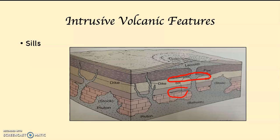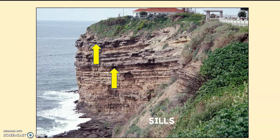Sills are formed when magma squeezes between sedimentary strata, cools, and solidifies, which you can see circled there. If you take a good look at this photograph, that darker colored rock — those are sills. The lighter colored rock is sedimentary rock. So what happened was magma came up into the crust, squeezed between the sedimentary strata, cooled, and solidified. Those are sills.